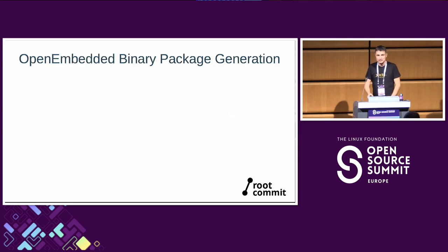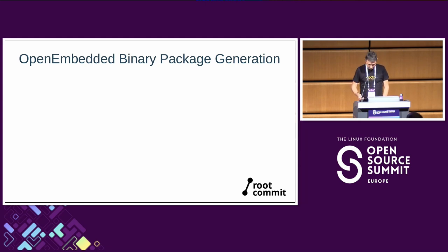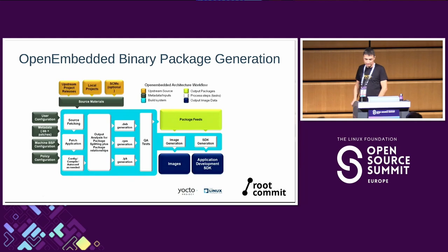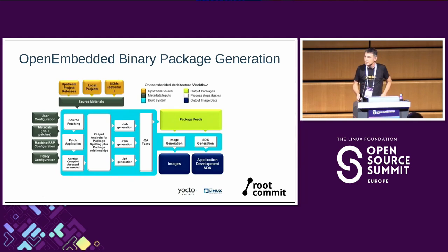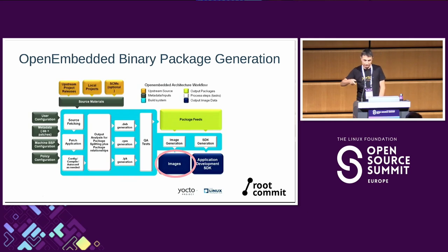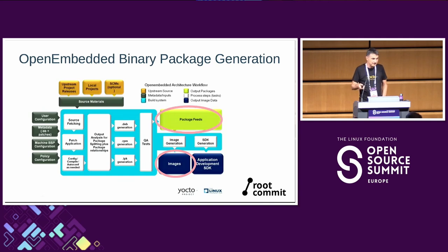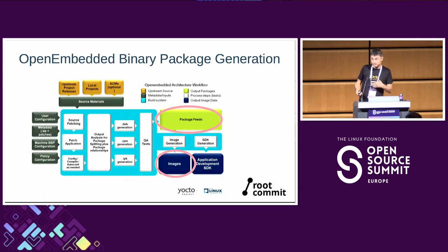How to make your binary distribution using Yocto — the existing features. There's a well-known diagram of how an image is built and how the package feed is built. Typically, images are built from packages: you compile from source, generate a package, and install it in the image. Or you generate a package that's not installed in the image but is provided in a feed, allowing installation later.